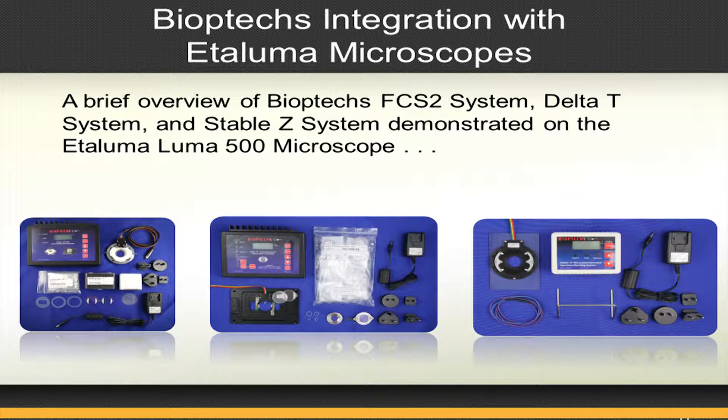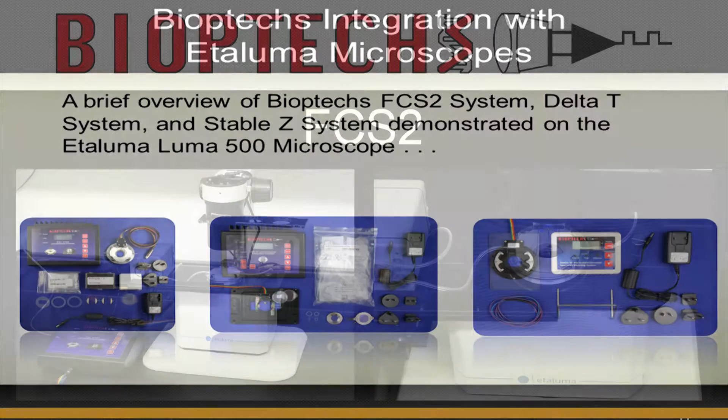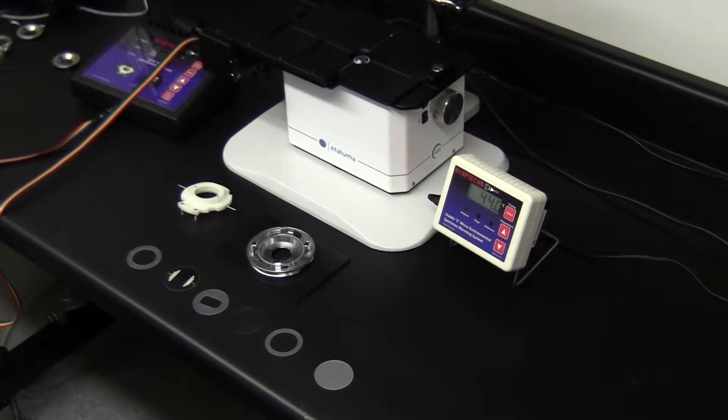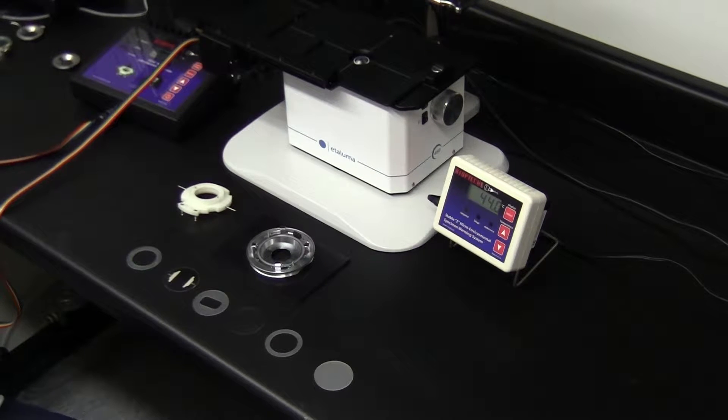The following is a demonstration of Bioptechs products as narrated by our founder and developer, Dan Fokt. This is an FCS2 flow cell on the Etaluma microscope. Here we have eight individual components that make up the optical cavity for the cells.